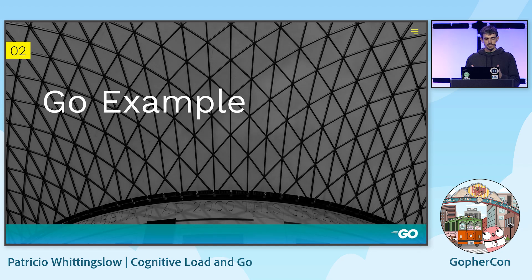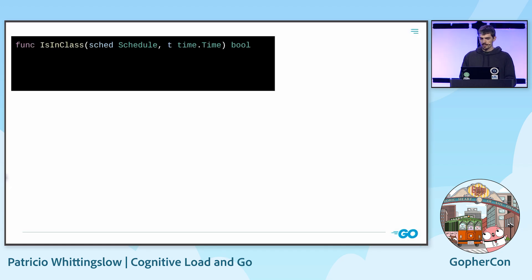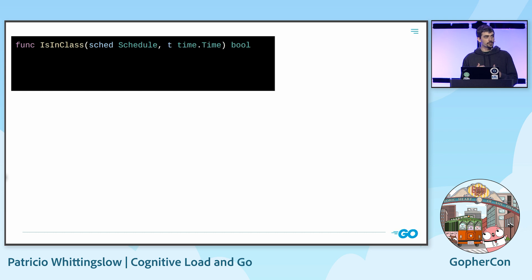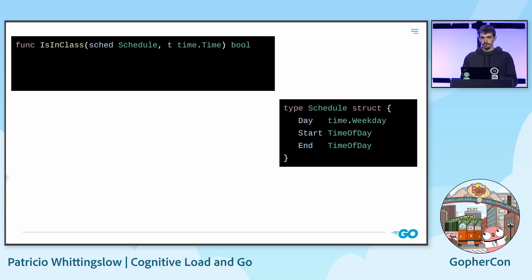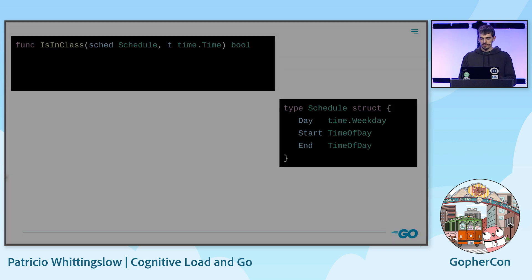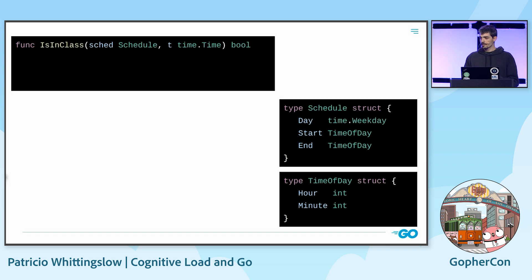Now let's see how we do the same in Go. From the get-go, we have one notable difference: types. We know our data structures in advance because Go forces us to find our data structures before we code logic. If we look for schedule, we are immediately greeted with a lean type definition. We can then follow the trail onto TimeOfDay. By then, after reading this amount of code, we are now ready to implement our algorithm in full.